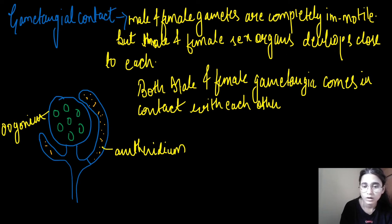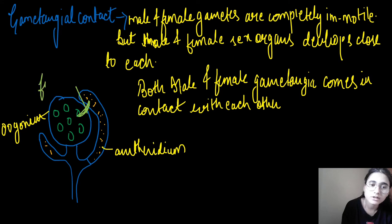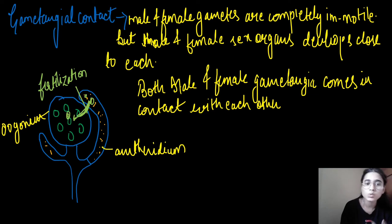They grow close to each other, and what happens here is that there is a fertilization tube development. Through this fertilization tube, the male nucleus travels to where the female body is — that is the oogonium.